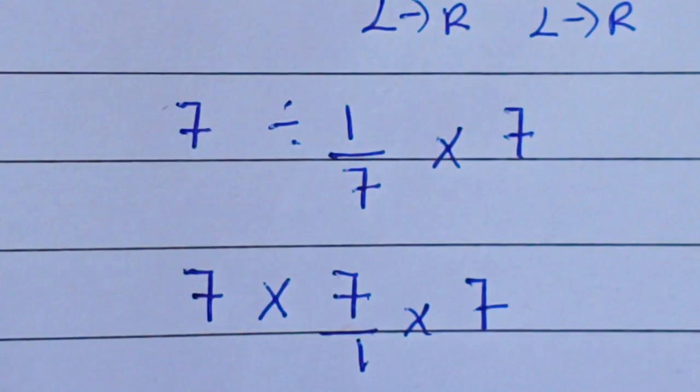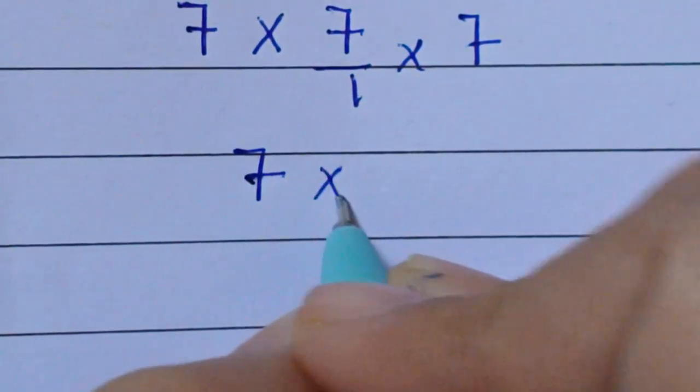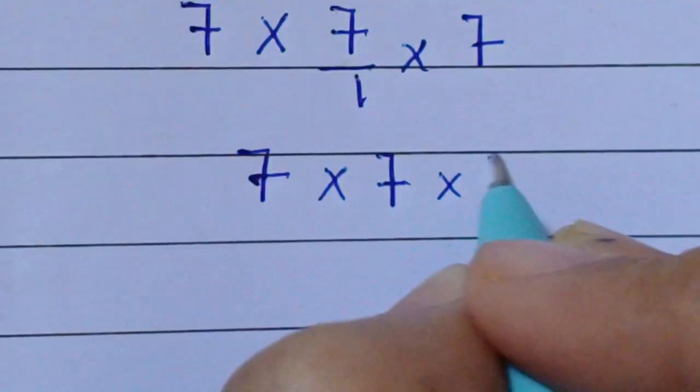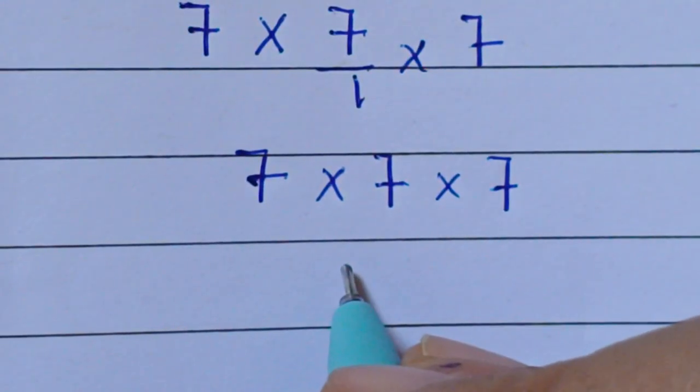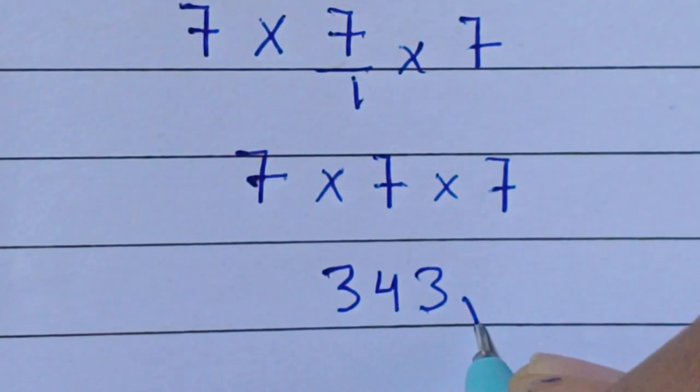So here 7 times 7 times 7, which is 343. This is the correct value for the expression.